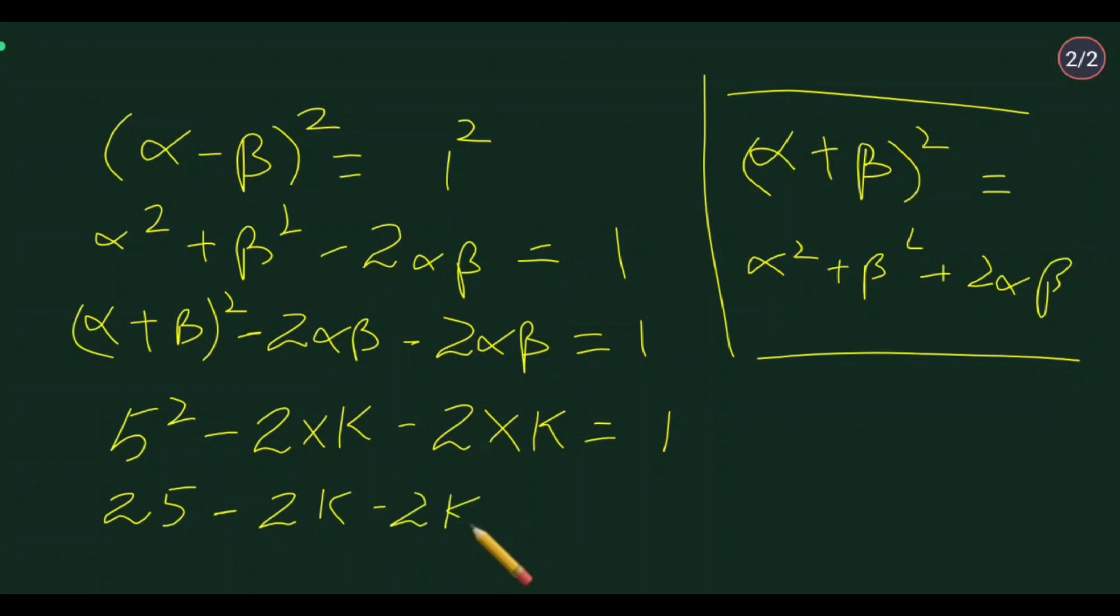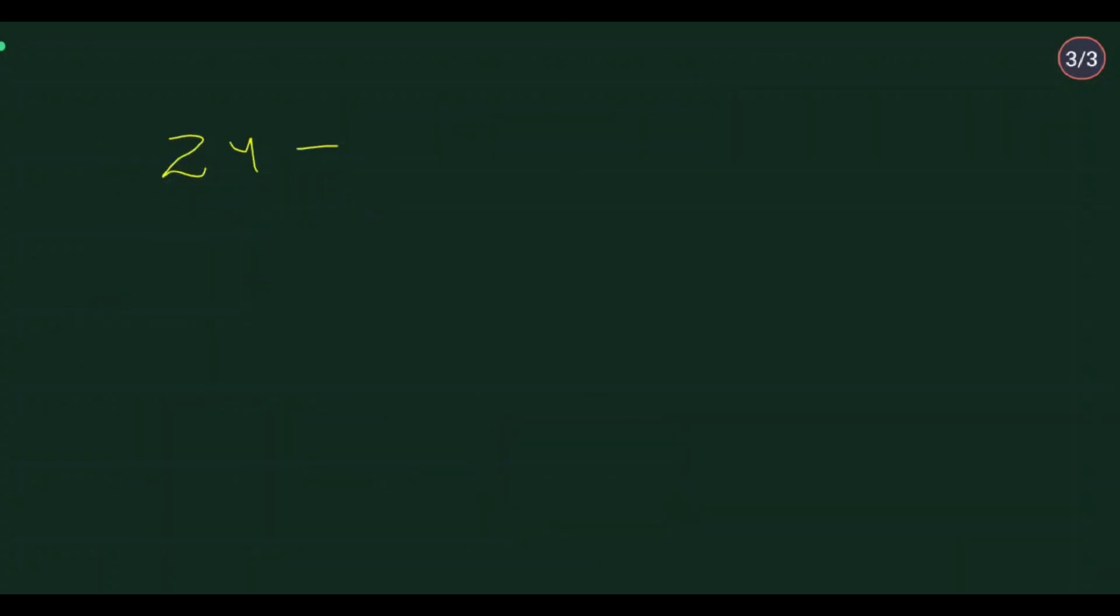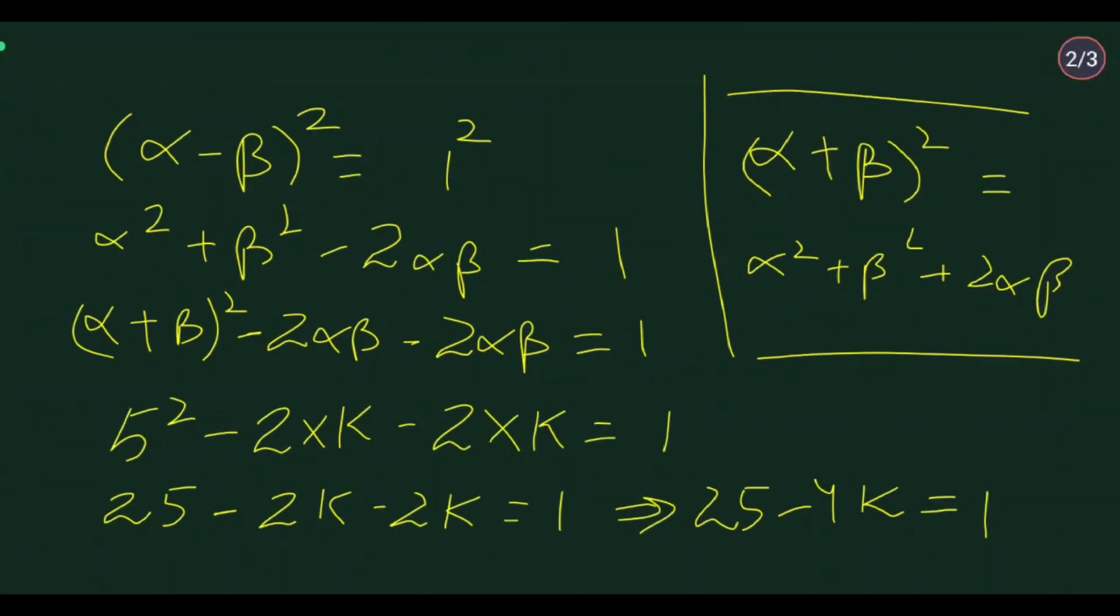So we have 25 - 4k = 1. Moving 1 to the left side, we get 24 = 4k. Solving this equation simply, k = 24/4 = 6.